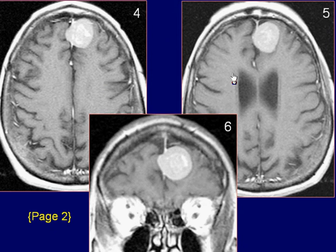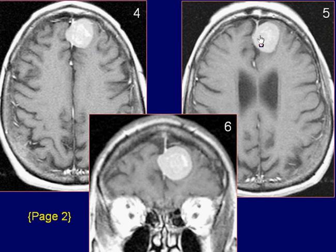Axial and coronal post-gadolinium T1 weighted images demonstrate intense and homogeneous enhancement of the lesion. Also noted is enhancement in the falx adjacent to the lesion.